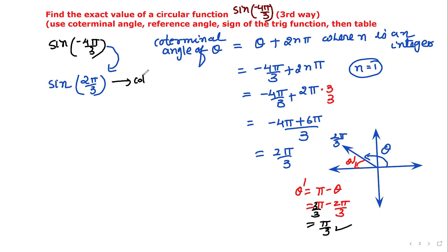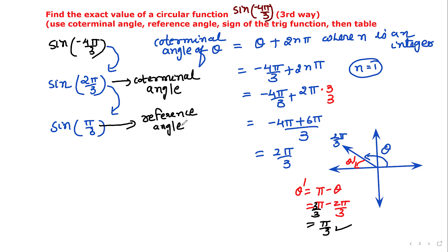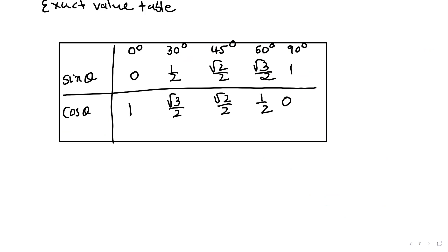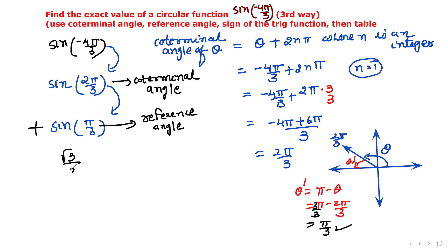2π/3 was the coterminal angle; now we write the reference angle as sine(π/3). The reference angle must be acute — between 0 and π/2. Remember: the reference angle comes with the responsibility of including the sign of the function in that quadrant. Sine is positive in quadrant 2, so the sine function takes a positive value. Using the table, sine(π/3) = √3/2. So the exact value is positive √3/2.